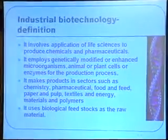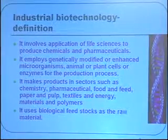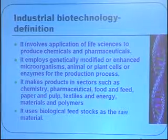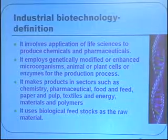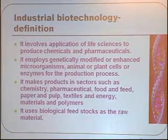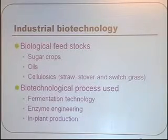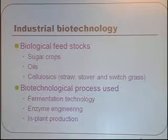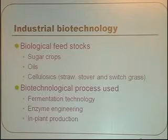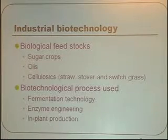It makes products in very diverse sectors like chemistry, pharmaceuticals, food, feed, paper, pulp, textiles, and so on. Importantly, it uses biological feedstock as a raw material for production. Industrial feedstocks used in biotechnology include sugar crops — maybe sugarcane juice or sugar — or conversion of starch into glucose, using glucose as a raw material for many products. It could also be oils like soybean or palm oil, or agricultural residues like straw, bagasse, or switchgrass grown specifically for biomass, later converted into useful chemicals.